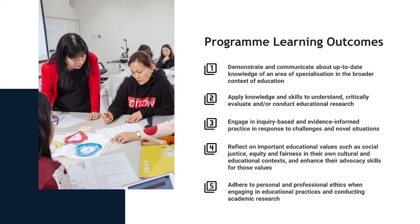We have five main learning outcomes. First, to demonstrate that they communicate about up-to-date knowledge of an area of specialization in the broader context of education. Second, apply knowledge and skills to understand, critically evaluate and/or conduct educational research. Third, engage in inquiry-based and evidence-informed practice in response to challenges and novel situations. Fourth, reflect on important educational values such as social justice, equity and fairness in their own cultural and educational contexts and enhance their advocacy skills for those values. And fifth, to adhere to personal and professional ethics when engaging in educational practices and conducting academic research.